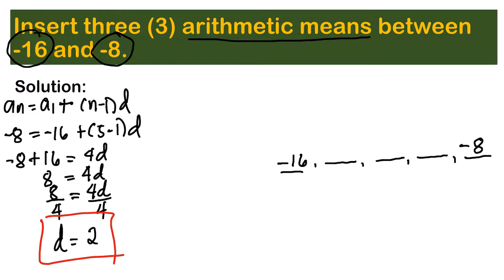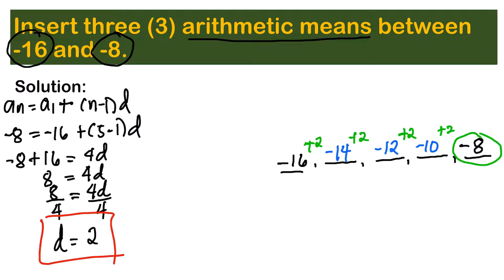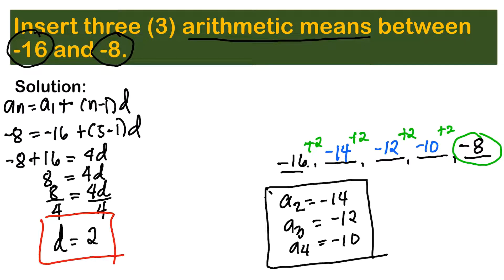Now that we have the common difference, simply add 2 to each term. Negative 16 plus 2 gives negative 14, plus 2 gives negative 12, plus 2 gives negative 10, and plus 2 gives negative 8 — which confirms our answer is correct. So a sub 2 is negative 14, a sub 3 is negative 12, and a sub 4 is negative 10. These are the three arithmetic means between negative 16 and negative 8.